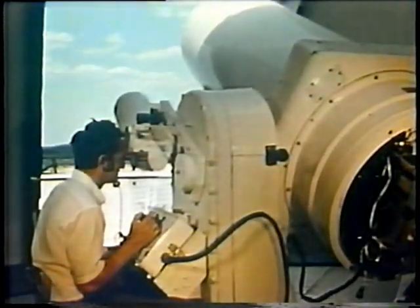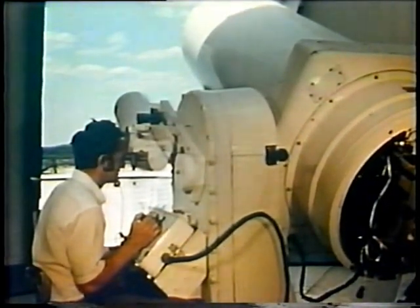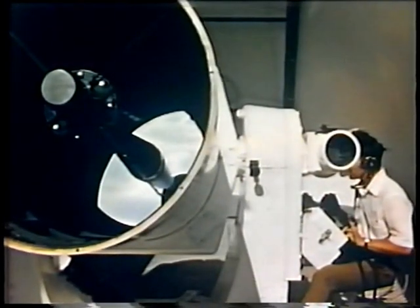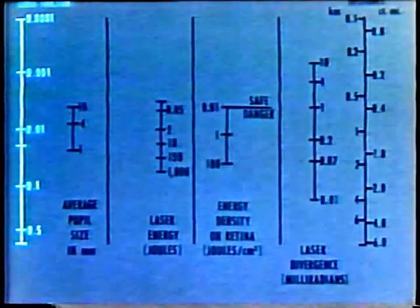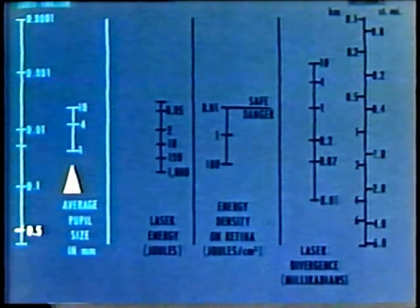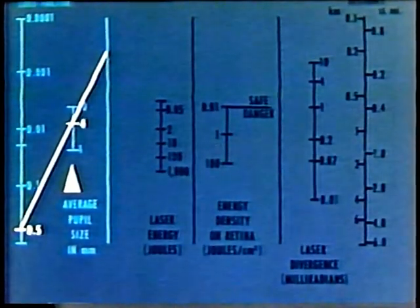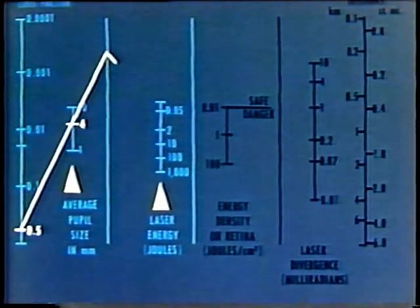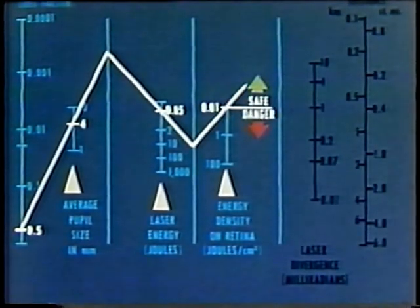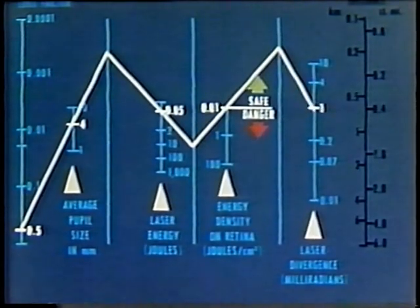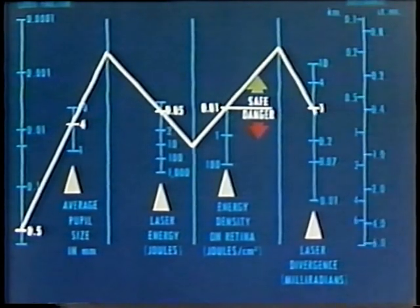For long-range laser uses such as in satellite tracking, there are several ways of figuring safe levels of exposure. One of these, the nomogram, figures in the loss factor due to the beam passing through the atmosphere and through the tissues of the eye, the aperture of the average pupil, the laser output energy in joules, the concentration of energy on the retina, and the beam divergence — thereby calculating a safe distance.